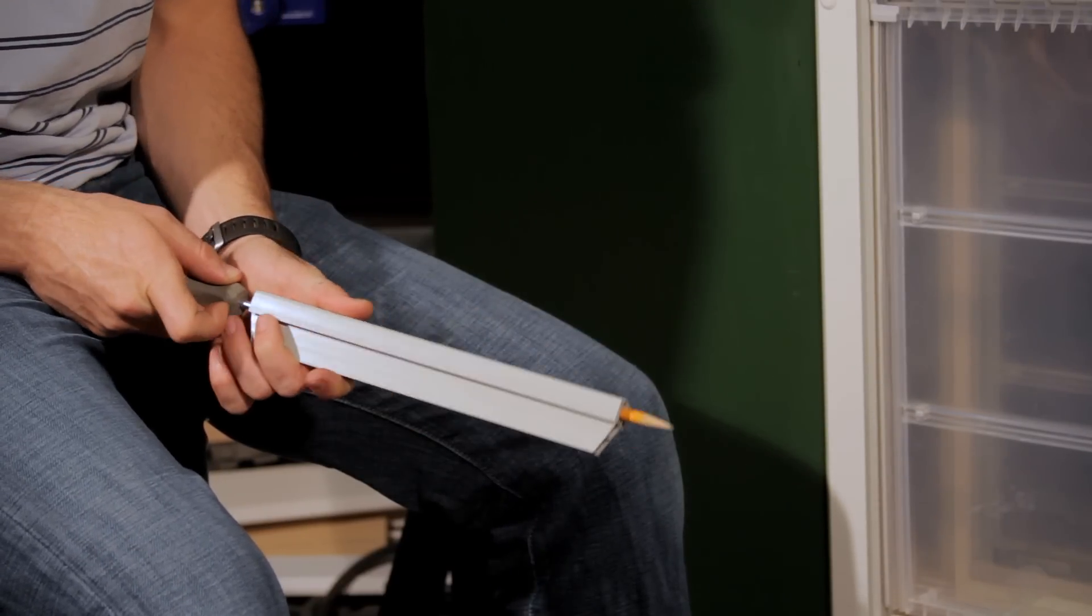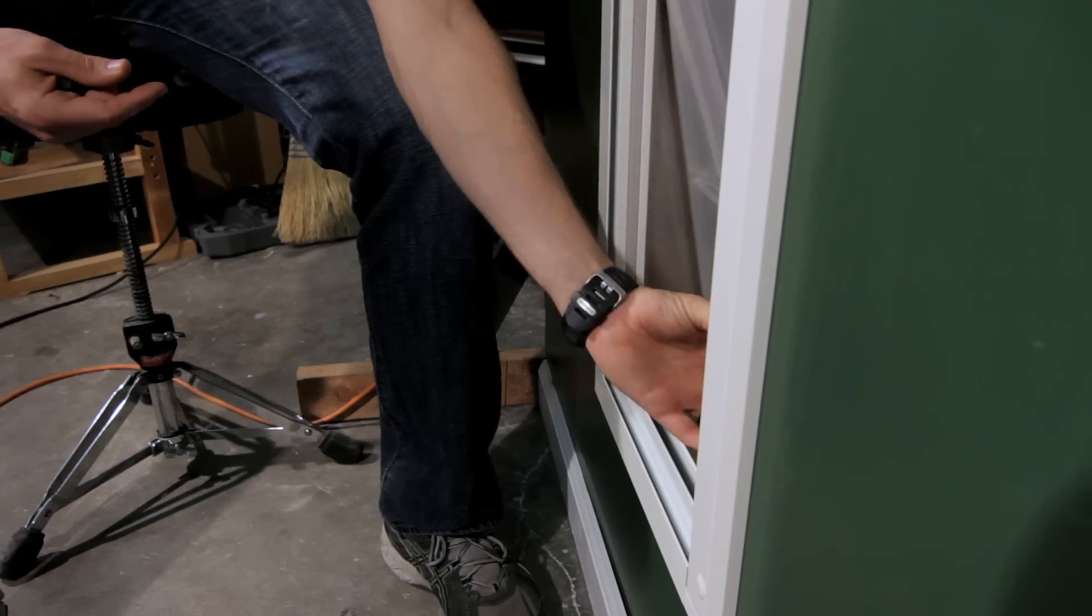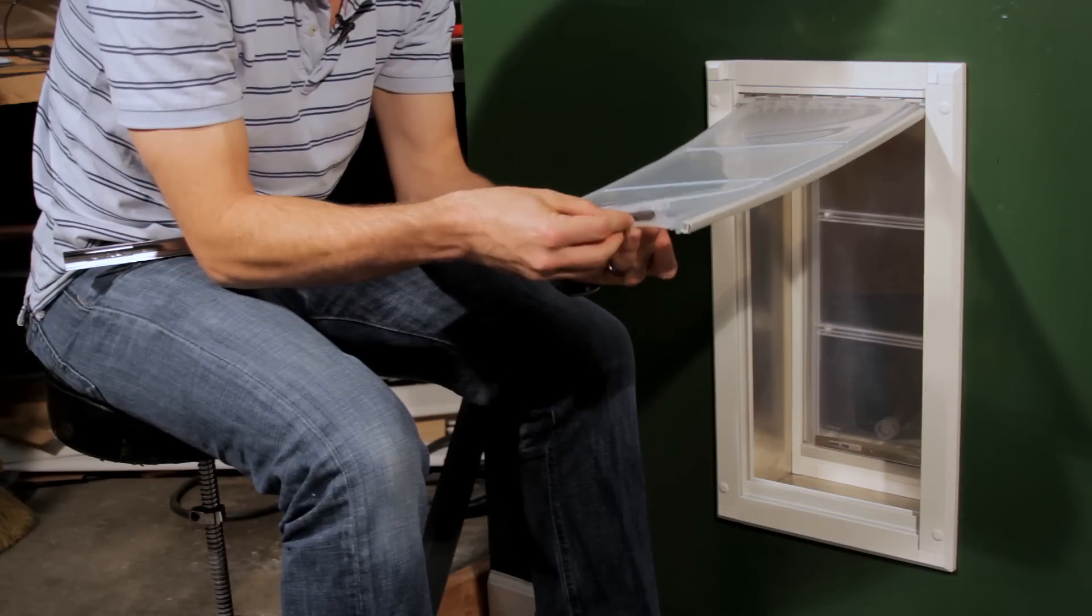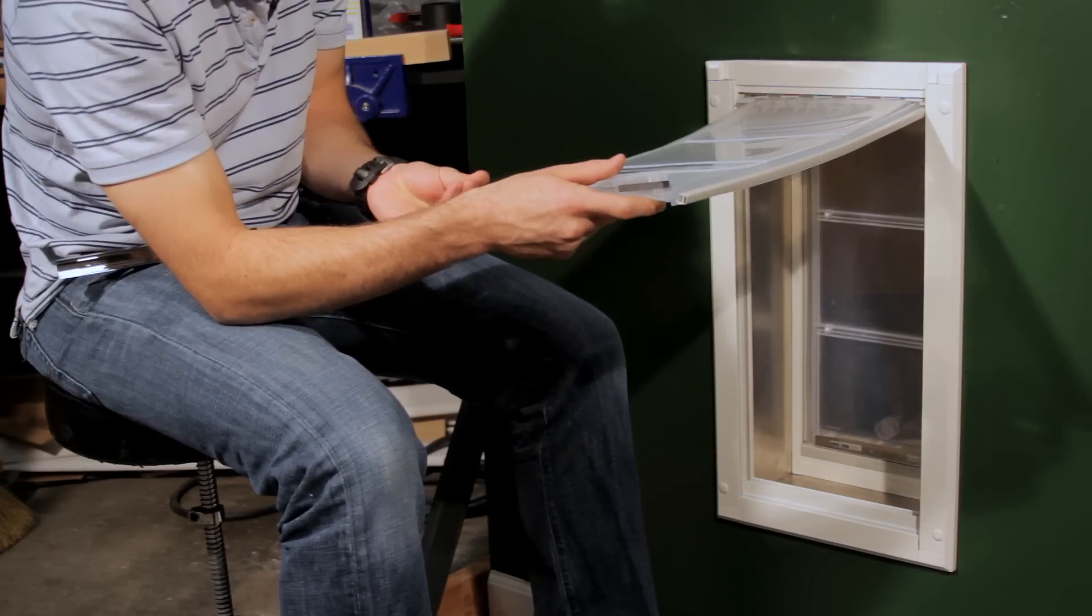To maximize the wind resistance with only one magnet, place the magnet in the center of the flap. With two magnets, place the magnets on the two outside sections of the flap.